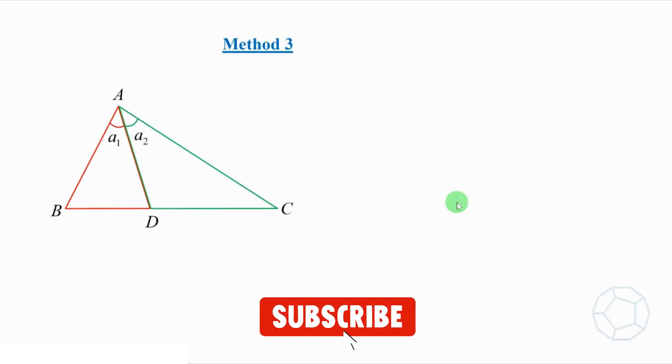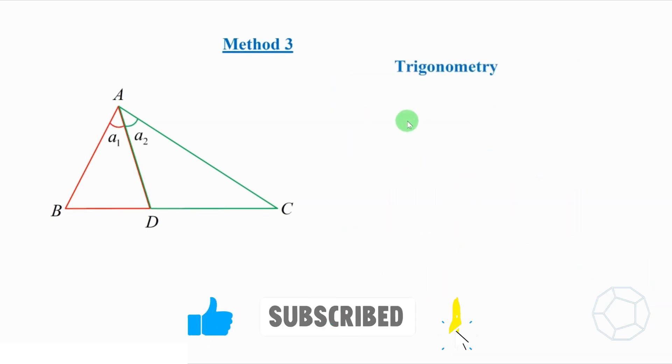The third method to prove the theorem is to make use of trigonometry. It's also the fastest method. In this case, we don't have to construct any extra lines. Label the two angles as theta and alpha. What can we say further? Let's apply the sine formula in the two triangles. We shall focus on the sides and their opposite angles.